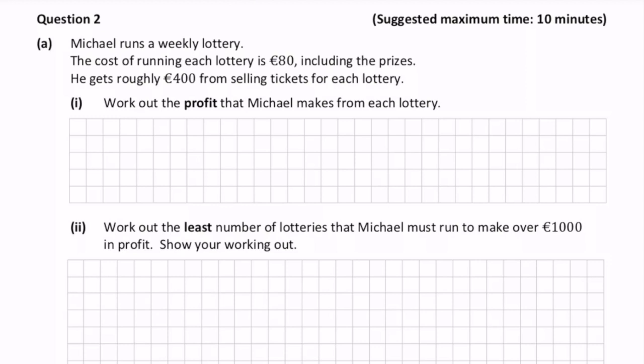His profit is 400 euros less 80 euros that he has in expenses. So 400 take away 80 euros is 320 euros. That's his profit.